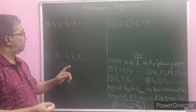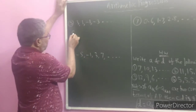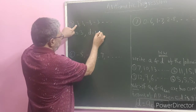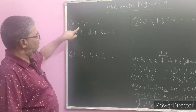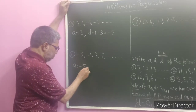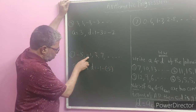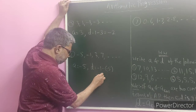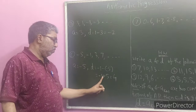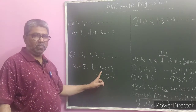Example number 5: 3, 1, minus 1, minus 3, and so on. Here the value of A, the first term, is 3, and the value of D is 1 minus 3, which is minus 2. So the first term is 3 and the common difference is minus 2. Coming to example number 6: here A is equal to minus 5. D is equal to minus 1 minus (minus 5), which is minus 1 plus 5, giving plus 4. So in this arithmetic progression, the first term A is minus 5 and the common difference is 4.